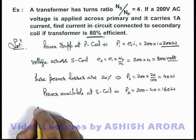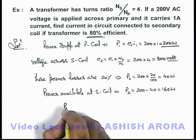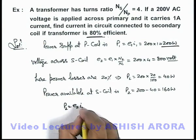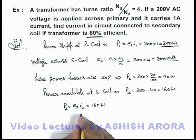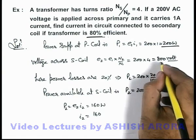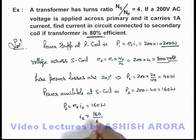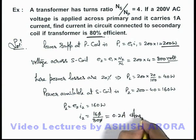We can directly write here the power available at secondary coil, P2, equals E2 × I2, which has a value of 160 watt. So the current in secondary coil is 160/E2. The value of E2 we calculated as 800, so this is 160/800. On simplifying, it is 16/80, which is 0.2 ampere. That will be the answer to this problem.